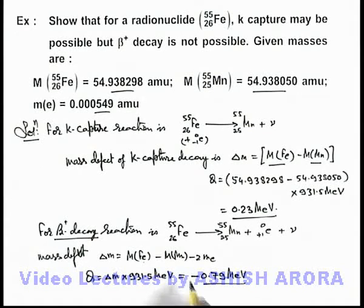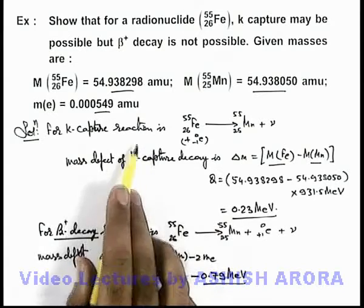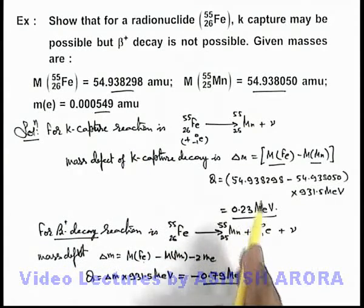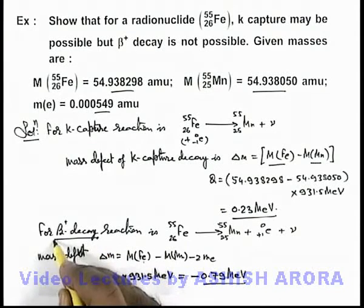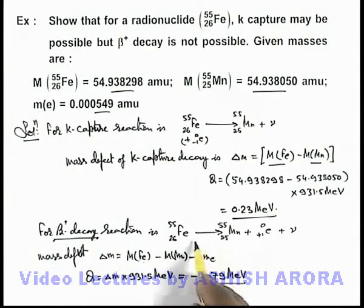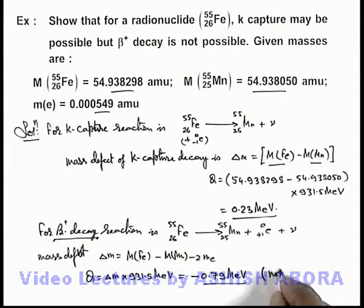This negative Q-value implies that for this reaction to occur, this much energy needs to be supplied rather than released. In K-capture, some energy is released, so the product is more stable. In beta-plus decay, the reaction will not spontaneously occur unless we supply energy, so it is practically not possible. This is what we were required to prove.